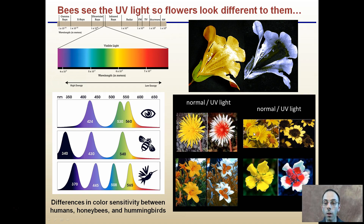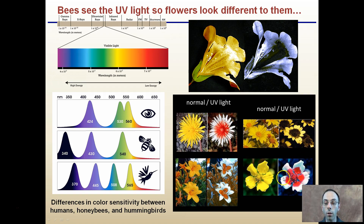The same thing here — under normal light we see a nice yellow, but under UV light we see that distinctive darkening center region. The same goes for this flower and also this flower. It provides that extra highlight to tell the bees, 'hey, come here, this is where the nectar is.'